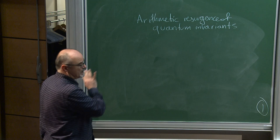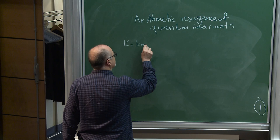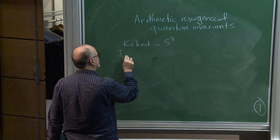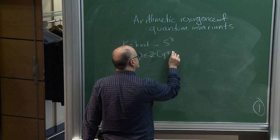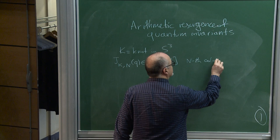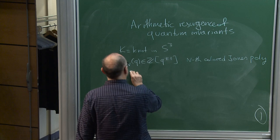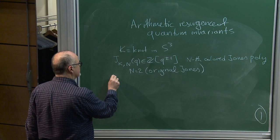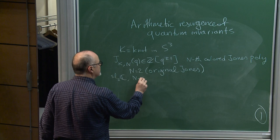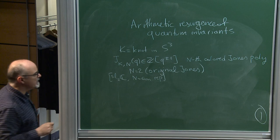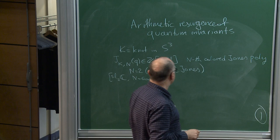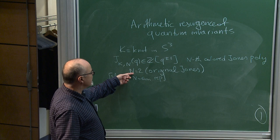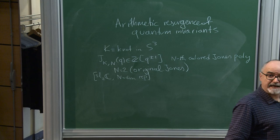We are talking about a knot in the three-sphere. To a knot there is a sequence of Laurent polynomials with integer coefficients called the nth colored Jones polynomial. For instance, n=2 is the original Jones polynomial. These are defined using the representation theory of SL₂ together with the n-dimensional representation. One knot has a sequence of polynomials; the nth colored Jones polynomial is basically the Jones polynomial of n minus one parallels of the knot.